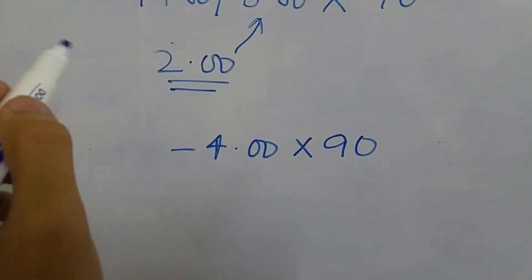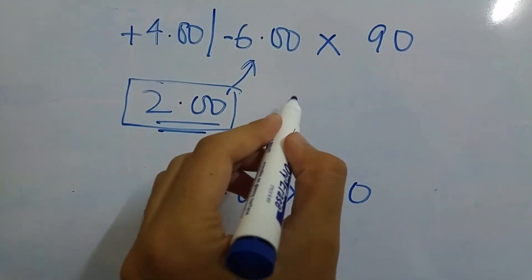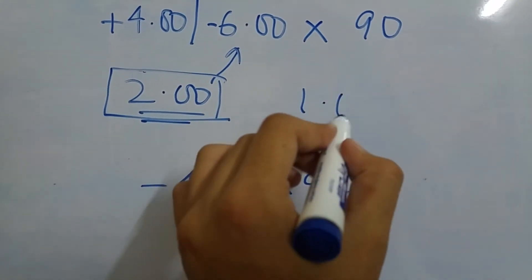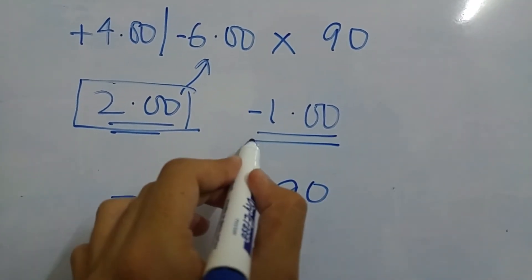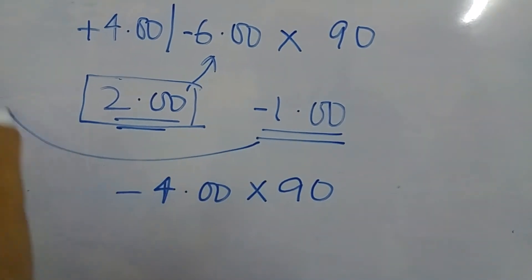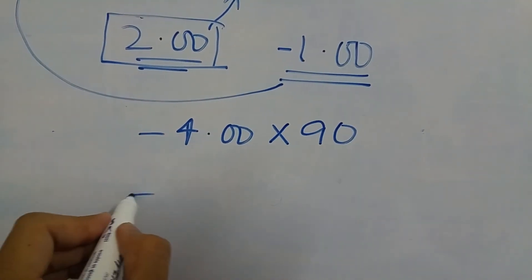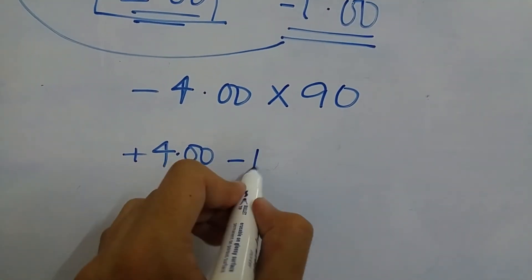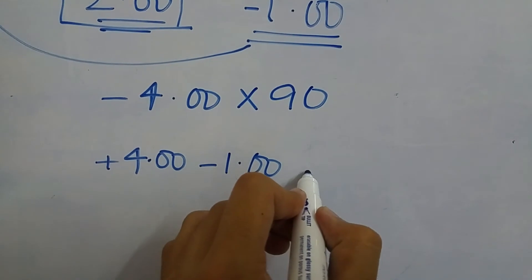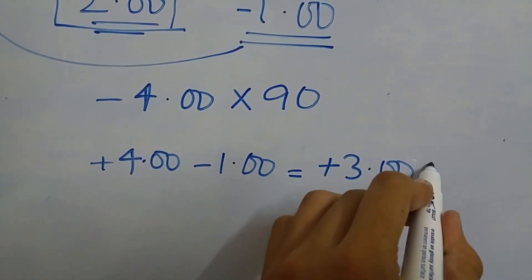The next step is to take half of the cylinder amount you have reduced. In this example it is two, so half of two is one. Now add this one into the sphere of the prescription algebraically. We get plus four minus one, which equals plus three. So this is our new sphere.